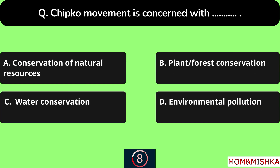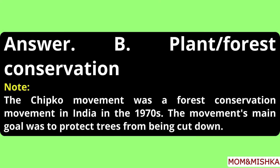Chipko movement is concerned with plant or forest conservation, option B. This was a forest conservation movement in India in the 1970s. The main goal was to protect trees from being cut down.